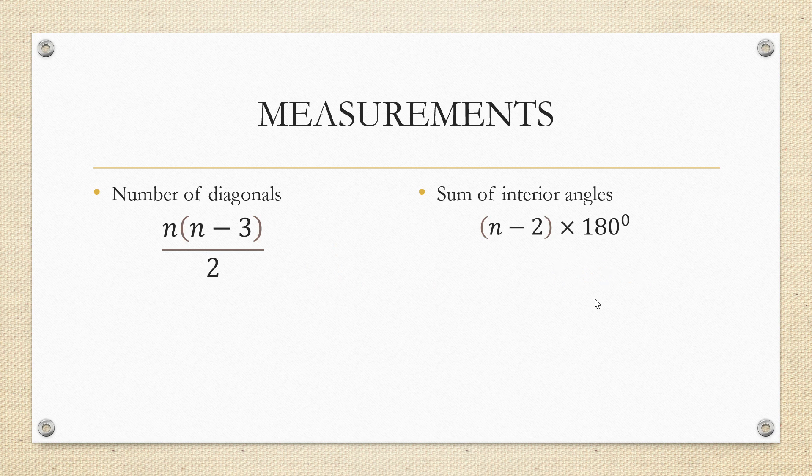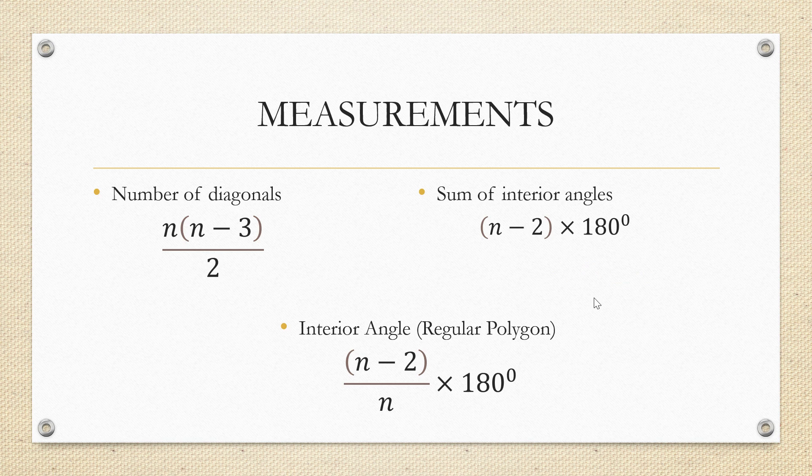If we take any regular polygon and want to find the interior angle, n minus 2 divided by n into 180 is used. Consider a pentagon with n equal to 5. In that case, if we substitute the values 5 minus 2 by 5 into 180, 3 divided by 5 into 180. This gives 3 into 36. That is, 108 is the measurement of interior angle for a regular pentagon.